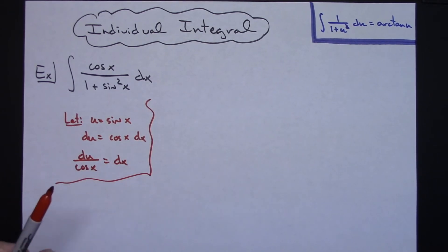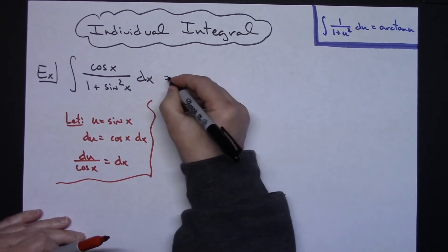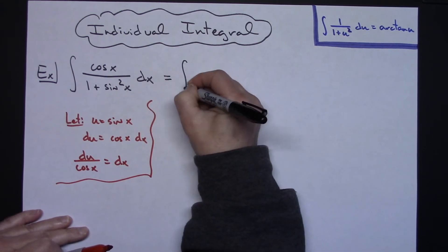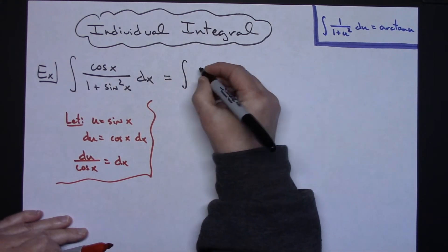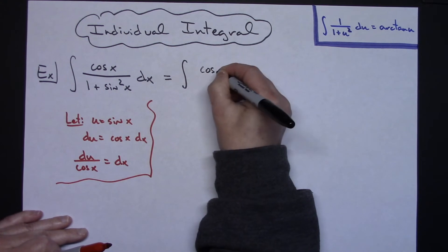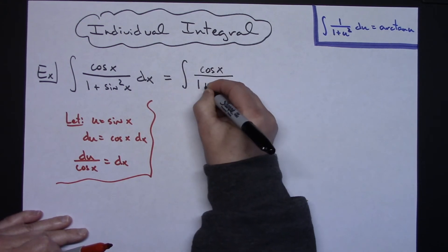After we do that, we'll come back to the original equation and do some substitutions. I'll have the integral with cosine x on top and 1 plus...